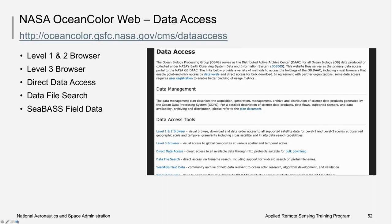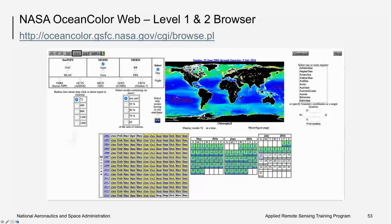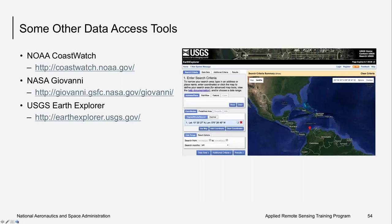The NASA Ocean Color Web is another data access resource where you can obtain Level 1 and 2 data from satellite sensors including MODIS, VIIRS, and HICO. You can select the sensor, month, year, date range, and provide a location. It is possible to download image data from this search tool and then load it into NASA's image processing software, SeaDAS, for further processing and analysis. Other useful data portals include the NOAA CoastWatch tool, NASA Giovanni, and the USGS Earth Explorer, which is useful for accessing Landsat data.